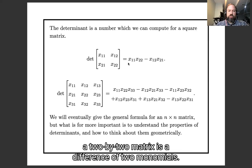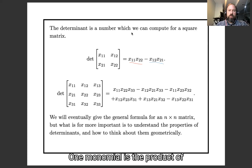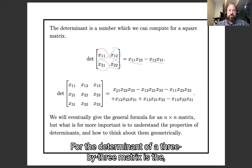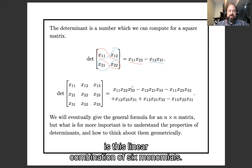So the determinant of a 2x2 matrix is a difference of two monomials. One monomial is the product of the diagonal terms, and the other monomial is the product of the off-diagonal terms. The determinant of a 3x3 matrix is this linear combination of six monomials.